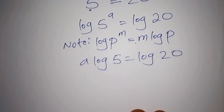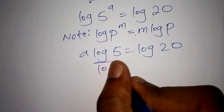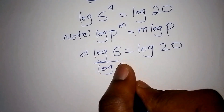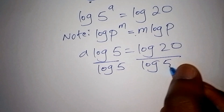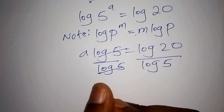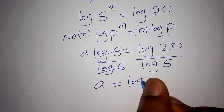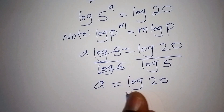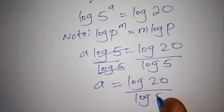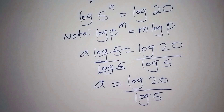Our next step is to divide both sides by log of 5. On the left side, log 5 and log 5 cancel each other. So a equals log of 20 all over log of 5.